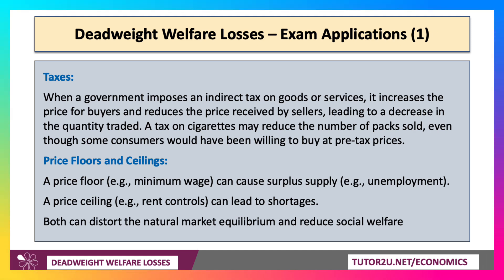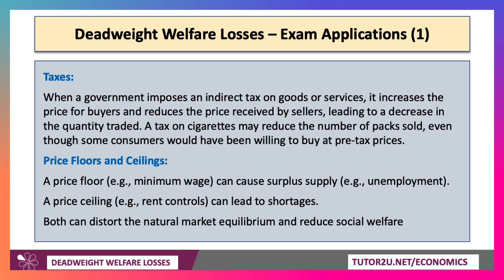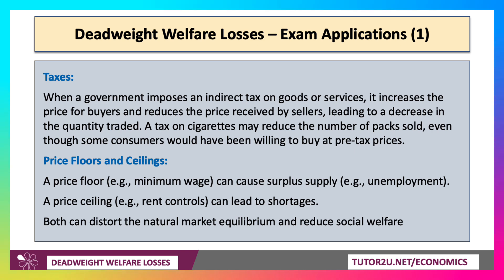Likewise, when governments intervene in markets, minimum wages can cause surplus labour supply or unemployment. A price ceiling of rent control in the housing market can lead to a shortage, excess demand, and a welfare loss. So both floors and ceilings — minimum and maximum prices — can distort the natural market equilibrium and, in theory, although they might be introduced for perfectly valid reasons, reduce social welfare.